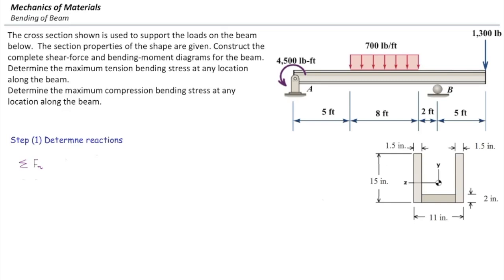And then we can use the equilibrium equations to determine the reaction forces. Sum of the forces in X direction simply says the horizontal component of the reaction force at A is zero.